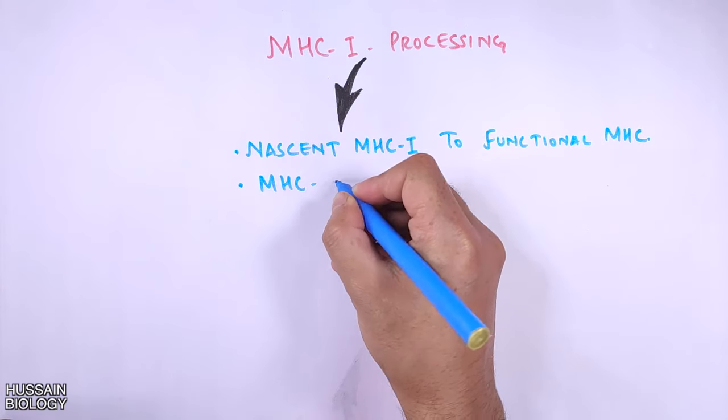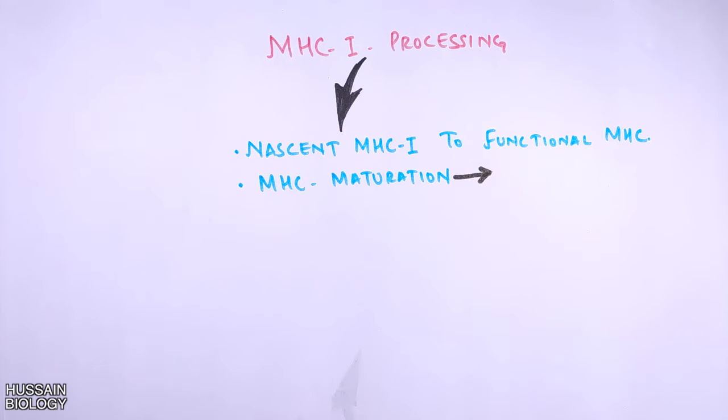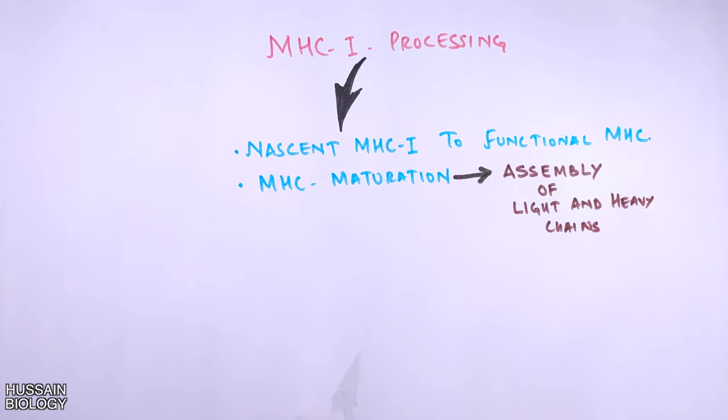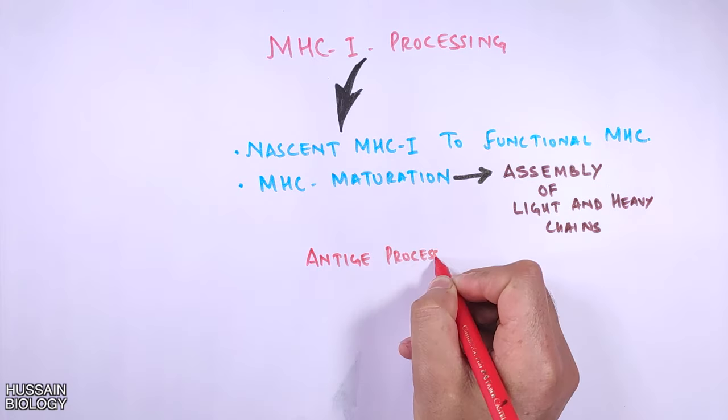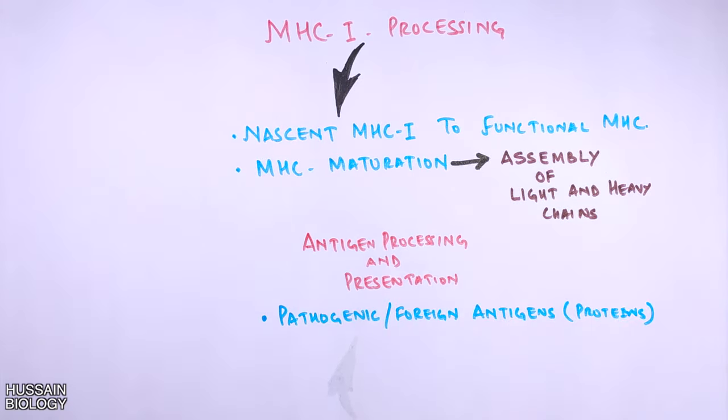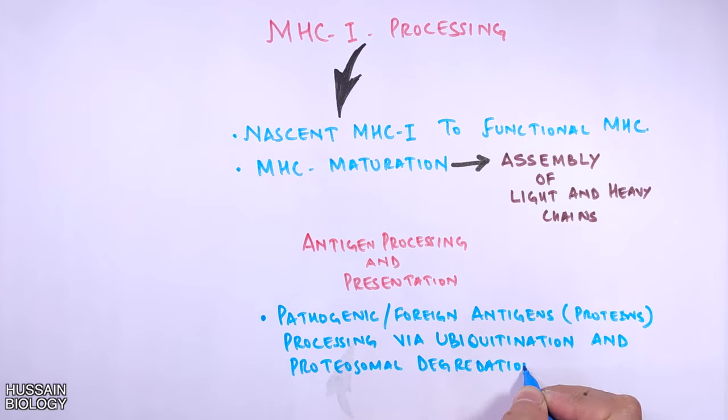In the process of MHC maturation, there is an assembly of light and heavy chains of the MHC molecule within the endoplasmic reticulum. In antigen processing and presentation, the pathogenic or foreign proteins are processed via ubiquitination and proteasomal degradation.